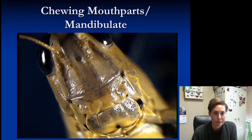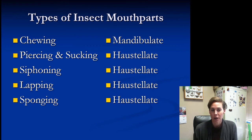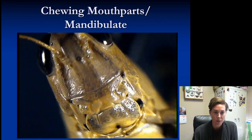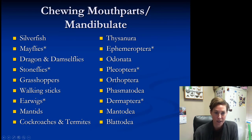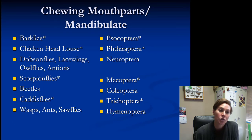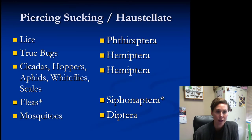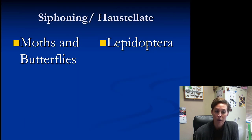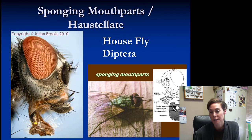To recap, the five main types of mouthparts are chewing, piercing and sucking, siphoning, lapping, and sponging. They're either mandibulate or haustellate — only chewing is mandibulate. There are a lot of insect orders with chewing mouthparts, so if you have absolutely no idea, chewing might be a reasonable guess. Piercing and sucking is a big group — all Hemipterans have it, so remember that if an insect feeds on plants or sucks blood, it has piercing and sucking mouthparts. Siphoning is only moths and butterflies. And sponging is the housefly, Diptera.